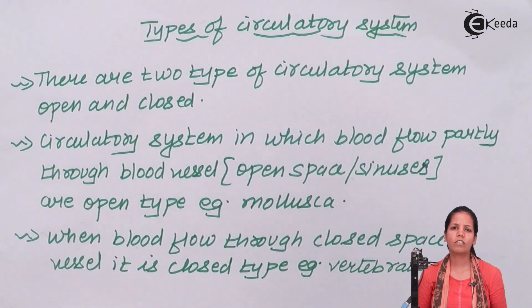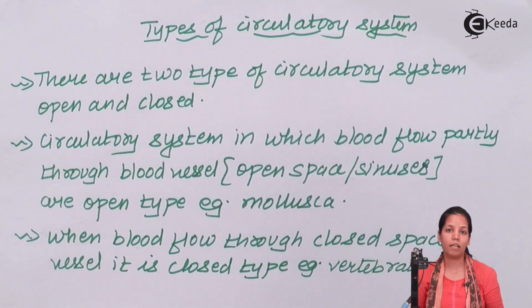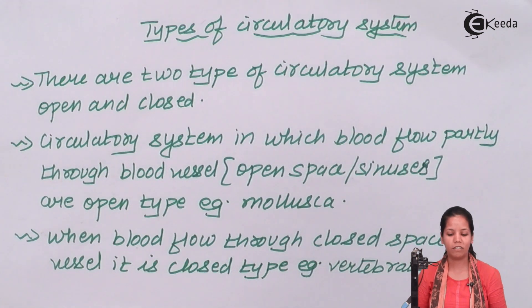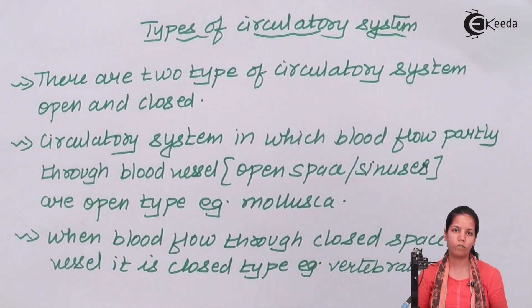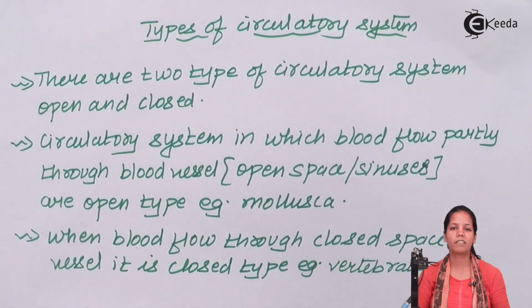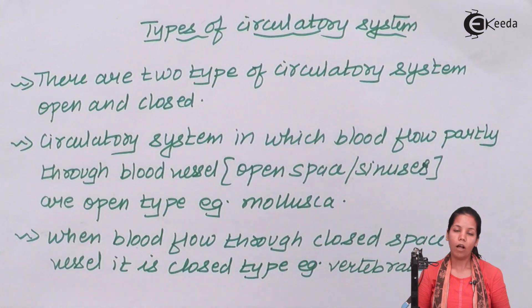But does the circulatory system in every organism on earth work the same? Not really. There are two different kinds of circulatory system — the open system and the closed system. We as human beings have a closed circulatory system, and certain animals have an open circulatory system.